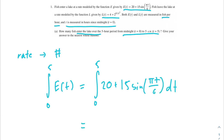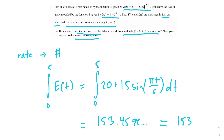Since this is a calculator problem, we're going to go ahead and just plug that into our calculators. There's no reason to integrate this by hand. So we get 153.4576. We should make sure that we're giving it to the nearest whole number, because that's what the problem told us to do. So we round that down to 153. Our final answer for this problem is 153 fish.